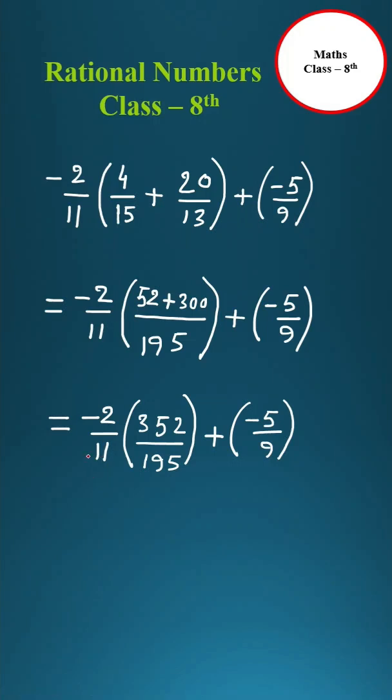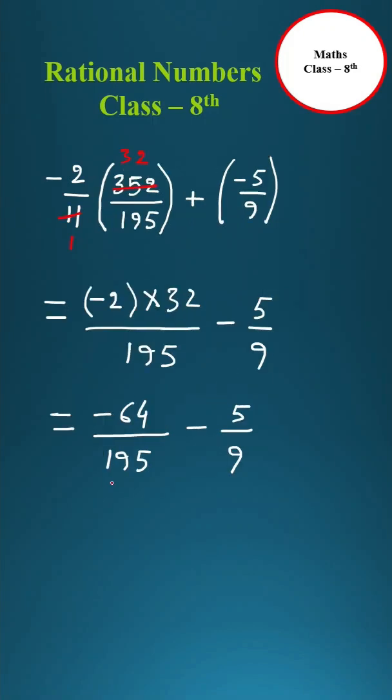Now cancel by 11, 11 into 1 is 11, 11 into 3 is 33, 222, 11 into 2 is 22. Now take the LCM of 195 and 9.